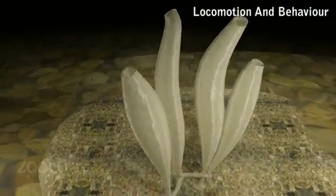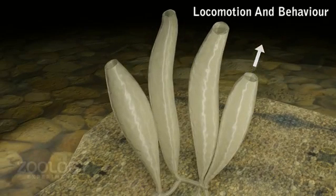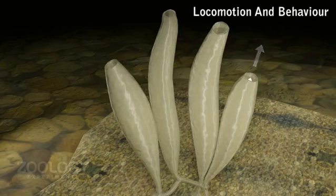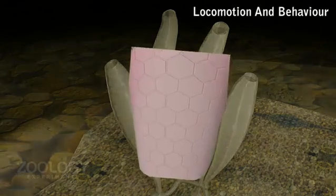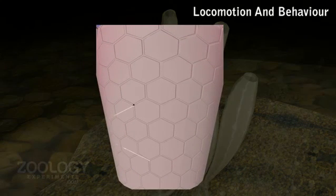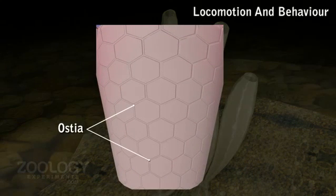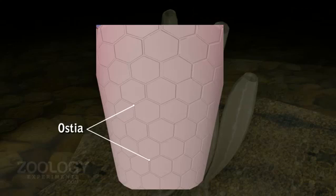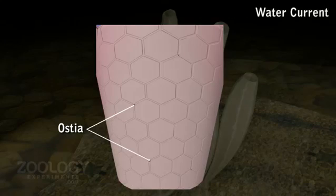Essential life processes of Leucosolenia depend upon a continuous uninterrupted flow of water through its porous body. Water current is caused by constant beating of the flagella of millions of koinocytes. Water enters spongosyl through ostea and exits through osculum.